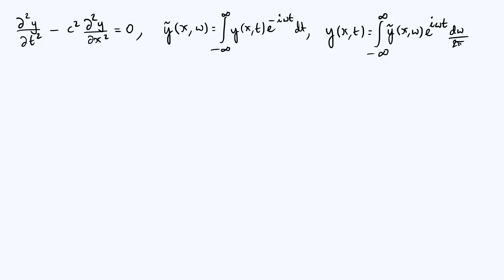So let's see what happens if we actually go ahead and take the Fourier transform of our original PDE. What I mean by that is you take the whole equation, multiply the entire equation by e to the minus i omega t, and then integrate both sides over all values of time. The reason this is useful is that differentiation in real space corresponds to multiplication by i omega in Fourier space.